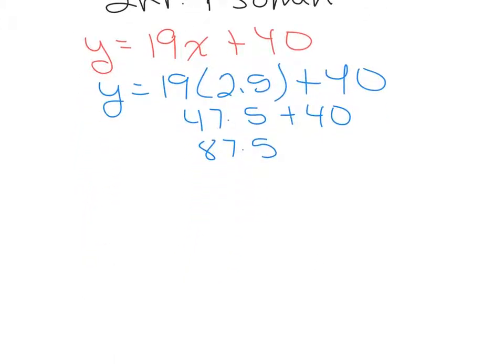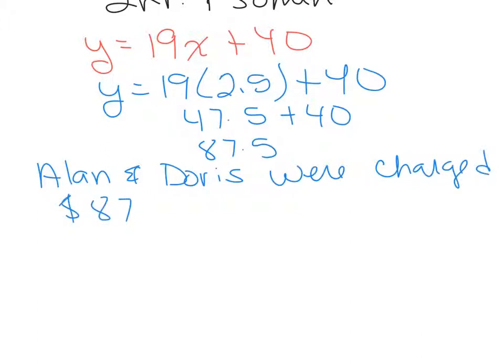So, in a complete sentence, Allen and Doris were charged. Don't forget your dollar sign. It's not 87.5, it's 87.50, because that's the format that we write dollars and cents.